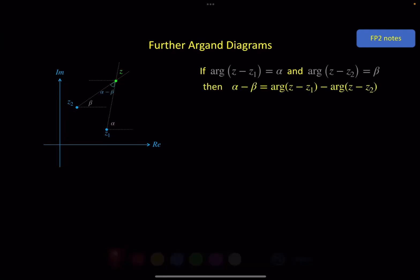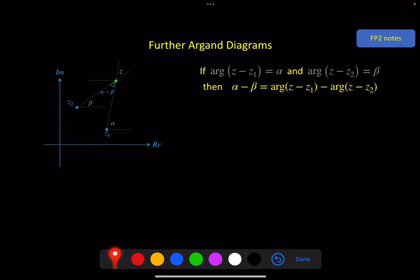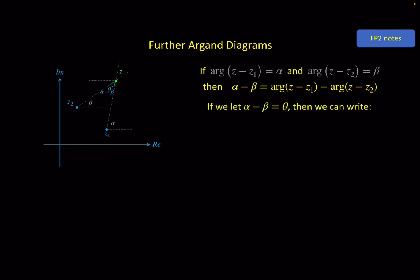Then we look at the angle involved here, and if you do a little bit of alternate angles work, you can see that this angle here is alpha minus beta. But alpha minus beta is also equal to the argument of z minus z1 from here, minus the argument of z minus z2 from here. Next, we replace alpha minus beta with the single angle theta.